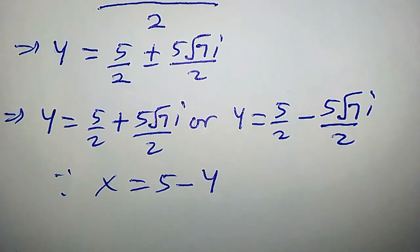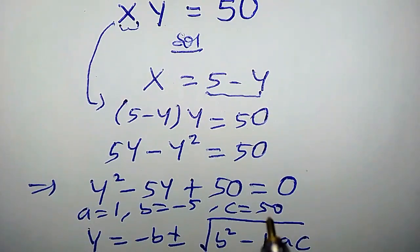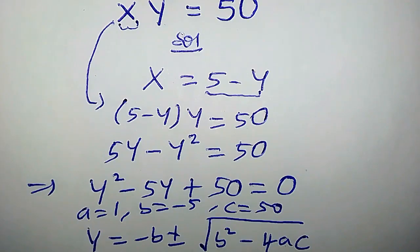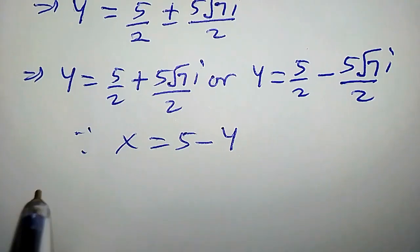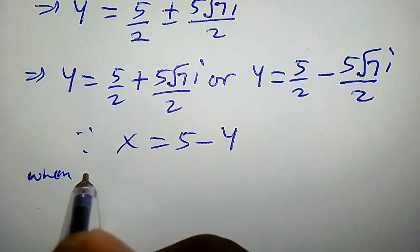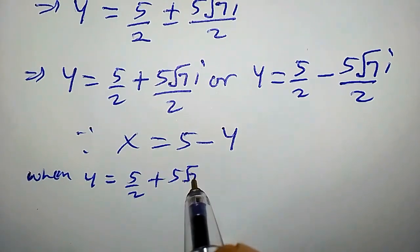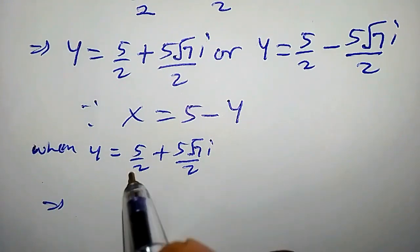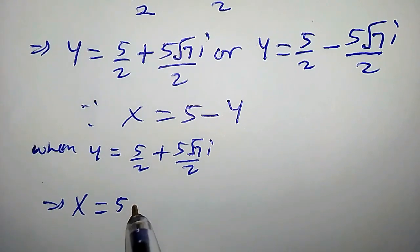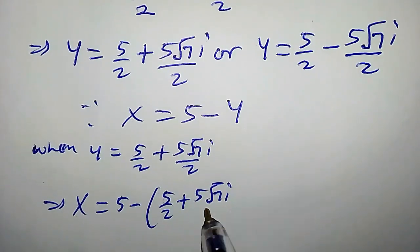Let me show you where we got this from — it is basically from this line. Now what we do is consider each value of y. When y is equal to 5 over 2 plus 5 root 7i over 2, what is x? Let us plug in this value, so we have x equal to 5 minus (5 over 2 plus 5 root 7i over 2).